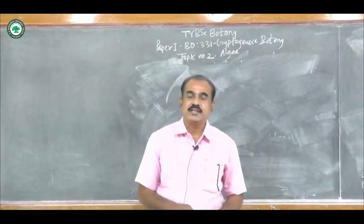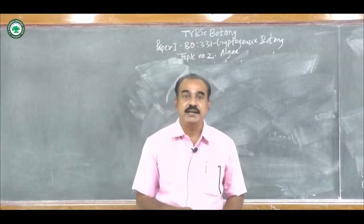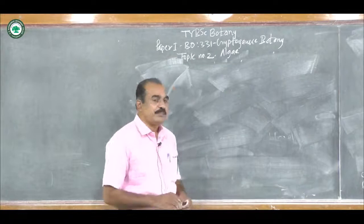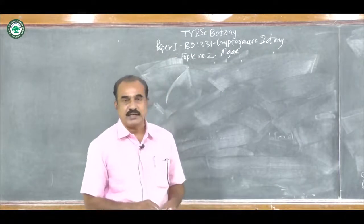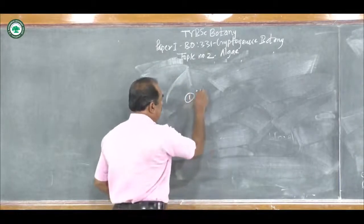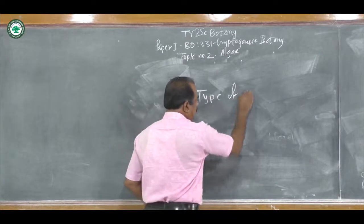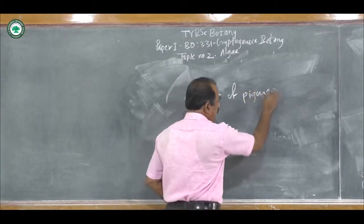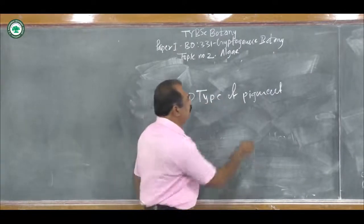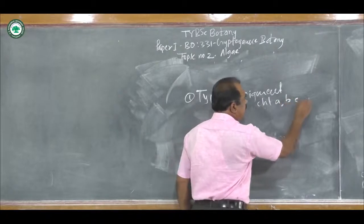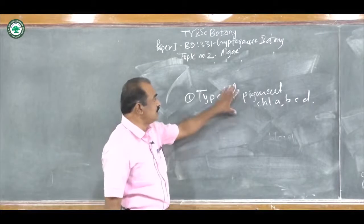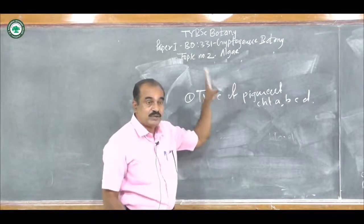The next point is the classification of Algae. According to V.J. Chapman and D.J. Chapman in 1973, up to classes only. They used different types of biochemical and morphological characters. These characters include, for example, type of pigment. There are different types of pigments in Algae: Chlorophyll A, B, C, D, Phycocyanin, Phycoerythrin, etc. This is the most important biochemical character for preparation of the classification.